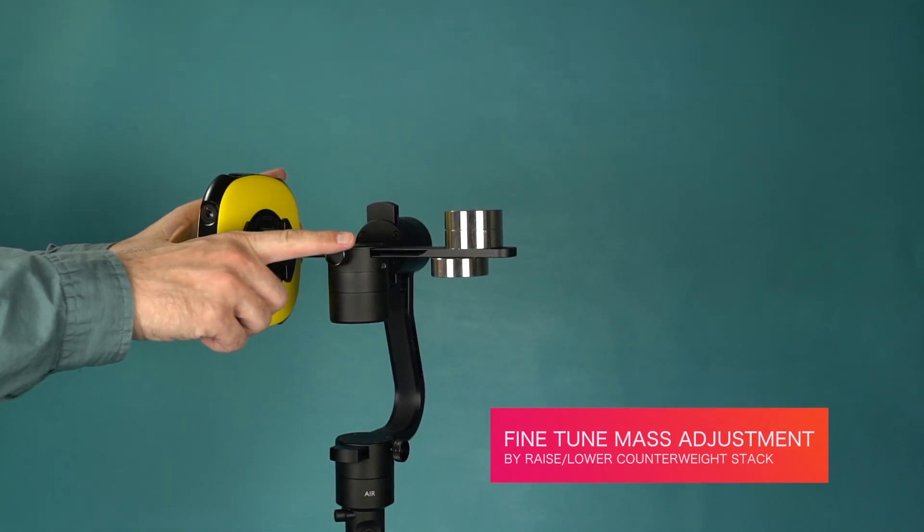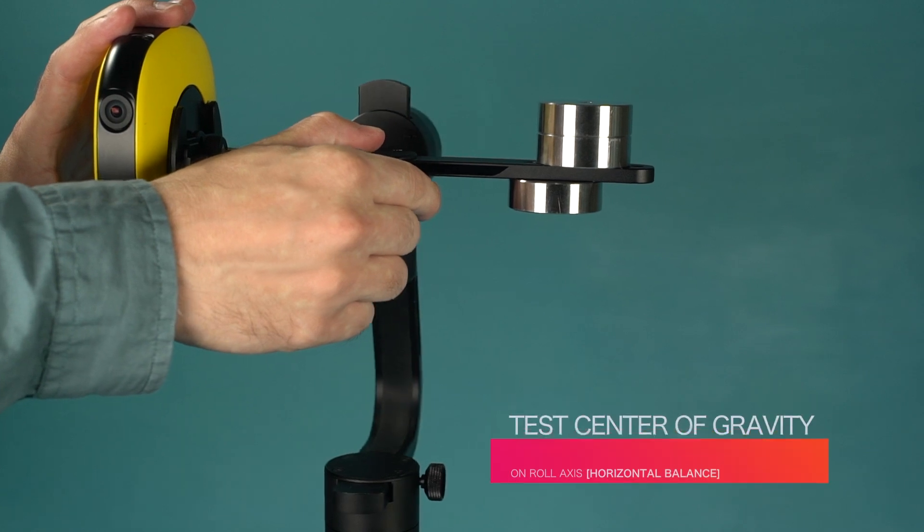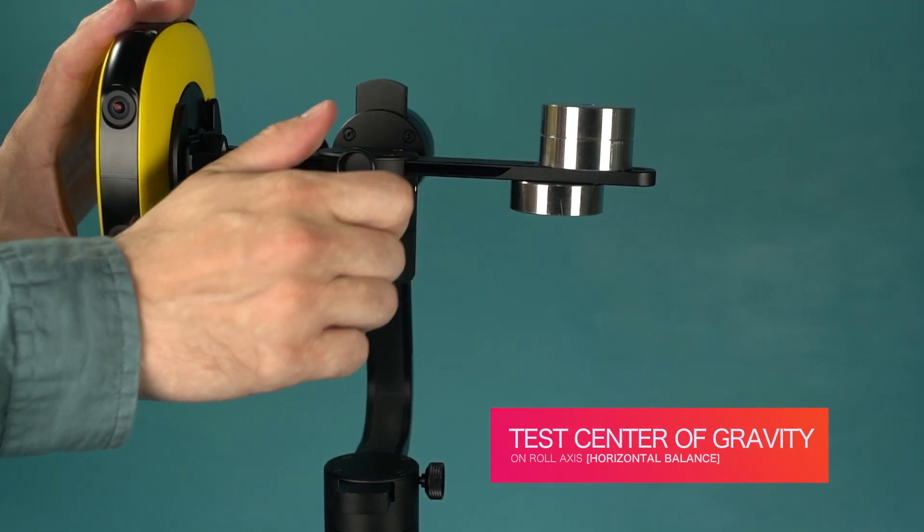By raising and lowering the counterweight stack, you'll be able to fine-tune the mass adjustment. To test the center of gravity, rotate the camera on the roll axis until it is horizontal.